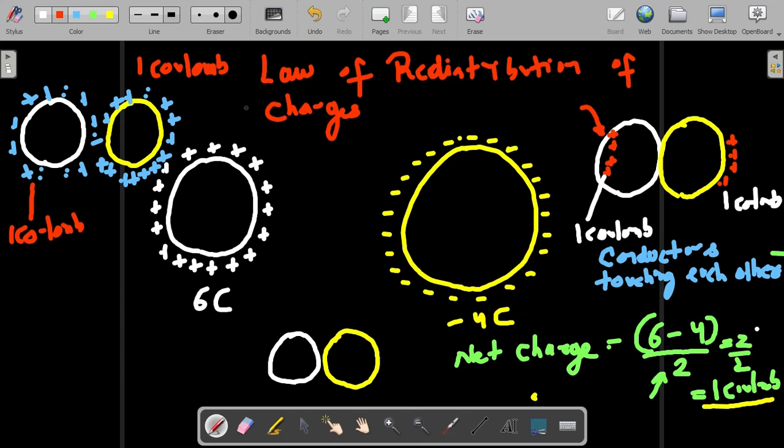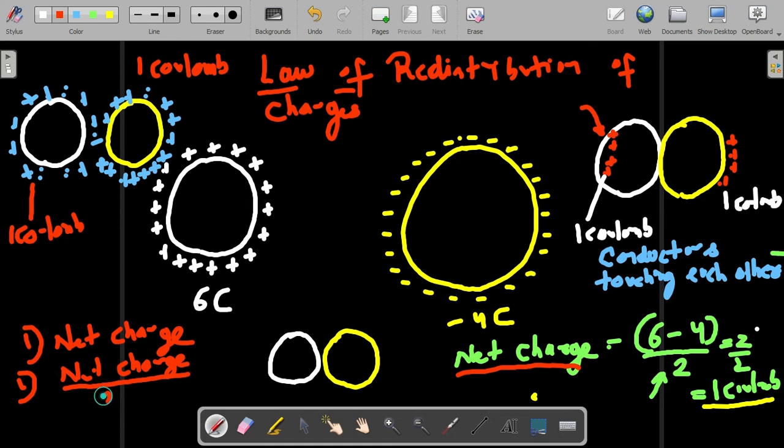So this law is known as the law of redistribution of charge. Always calculate—the first step is to calculate the net charge. Divide the net charge by two, that means divide the net charge in two parts between the two spheres.